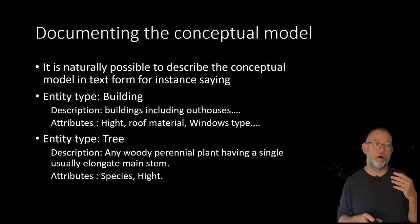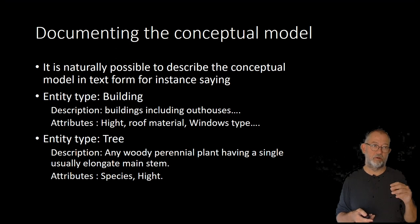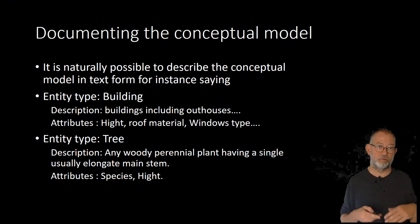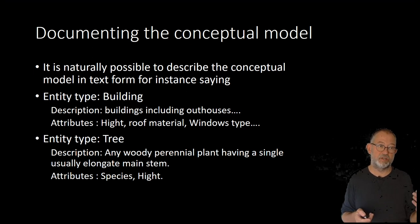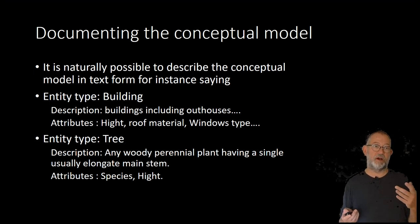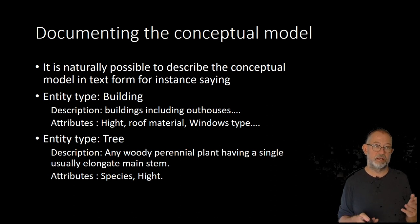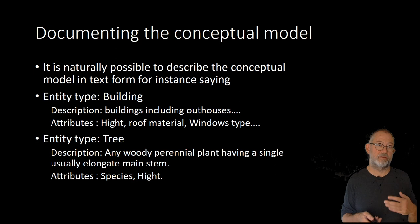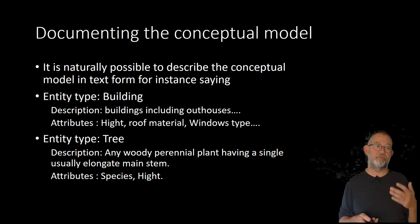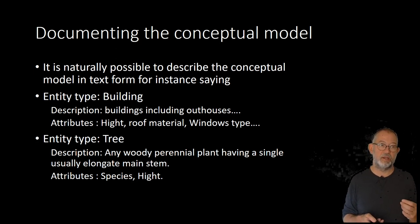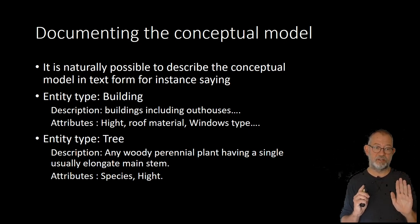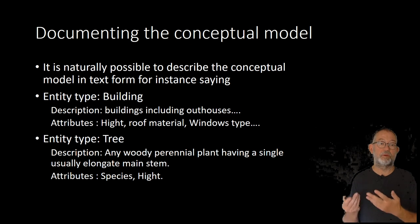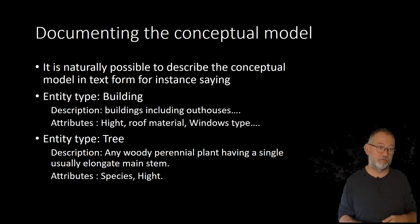We also have to describe our attributes — what they are: height, roof material, window type, and how they are classified. Or if it's a tree, we have to define what we mean by a tree. We will also have to define which attributes we register in our conceptual model. Remember, this is at the conceptual model level. There will be more documentation as we go into digital representations. We can do this by describing it in text, or often we use some form of diagramming.